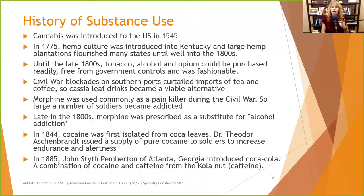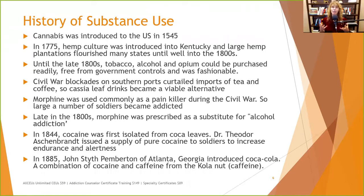Cannabis was first introduced to the U.S. in 1545. In 1775, the hemp culture was introduced into Kentucky and large hemp plantations flourished in many states until well into the 1800s — this was an economic business; farmers were making money from it. Until the late 1800s, tobacco, alcohol, and opium could be purchased freely from government controls and were quite fashionable to use. Social pressures said this was okay, there were no government controls making it difficult to get, and in many cases it was relatively affordable.